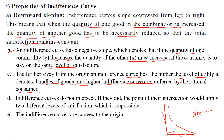The fourth property is that indifference curves do not intersect each other, because each indifference curve represents a different level of satisfaction. If two curves intersected, they would indicate one level of satisfaction, which is impossible. The fifth property is that indifference curves are convex to the origin.